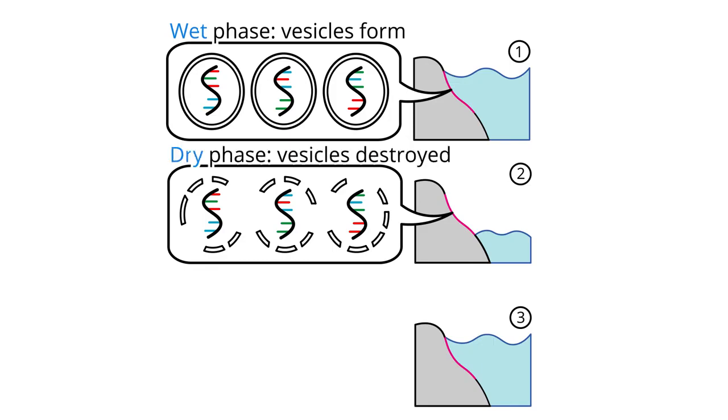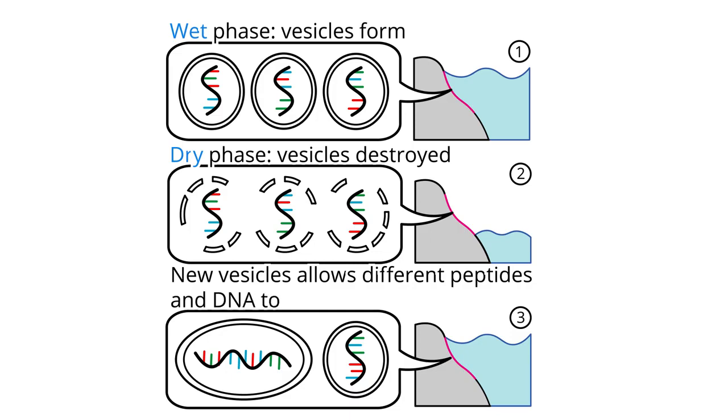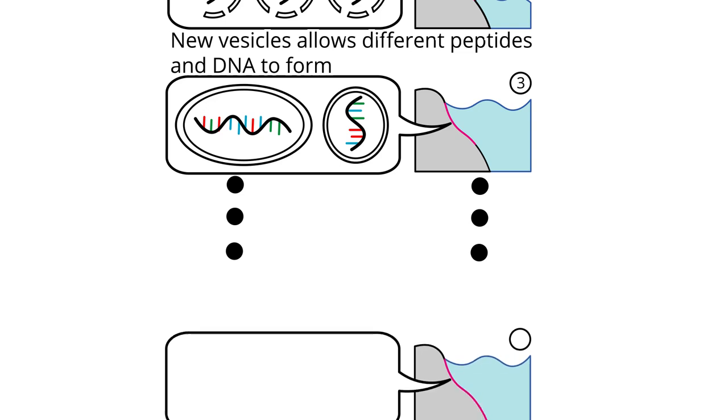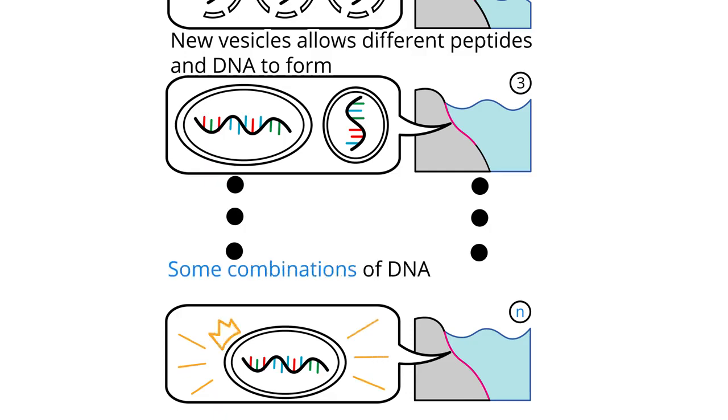The brilliance behind this proposition is that this constant creation and destruction of new vesicles allows different combinations of peptides and DNA to form over the many cycles. Over extended periods of time and countless cycles, it becomes realistic to imagine that by chance, some combination of these peptides or DNA start to give rise to unique properties and possible biological-like activity, such as reproduction.